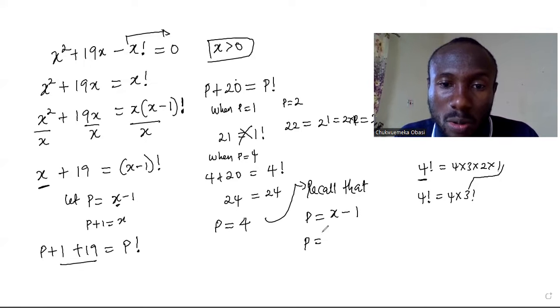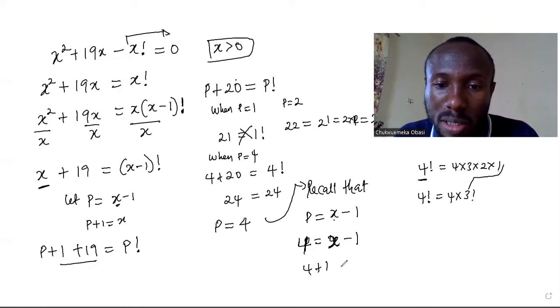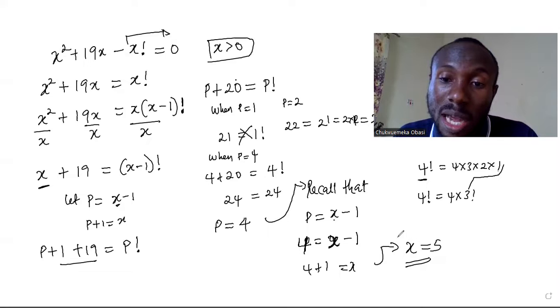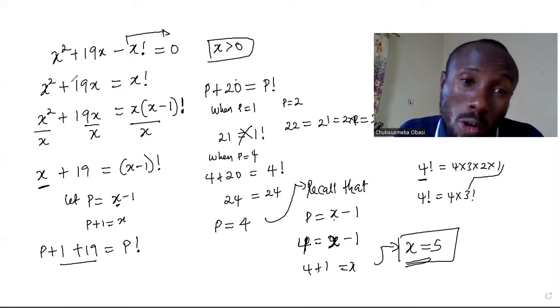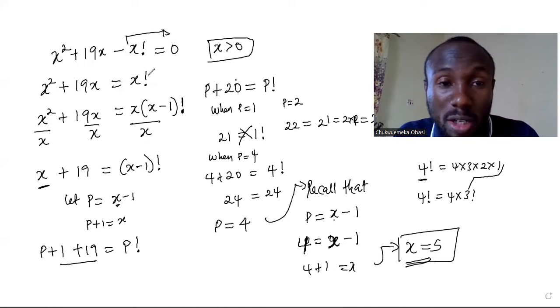So now we have p is equal to x minus 1, so we have p equal to x minus 1. That will be 4, so that should be 4 right here. Then we have x here minus 1, and that will give me 4 plus 1 is equal to x. And finally, x is equal to 5. So that's the answer to this quadratic factorial equation.